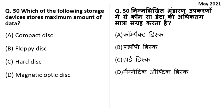Which storage device stores the maximum amount of data? Floppy disk, compact disk, hard disk, or magnetic optic disk? The answer is option C — hard disk. Nowadays hard disks come in the range of terabytes and can hold more than a terabyte of data. This is the final question. Please write your scores in the comment section and let us know if you liked this video — click the thumbs up button and subscribe to our channel so you never miss an update. The second video of this mock test series will be uploaded tomorrow at 8 AM.